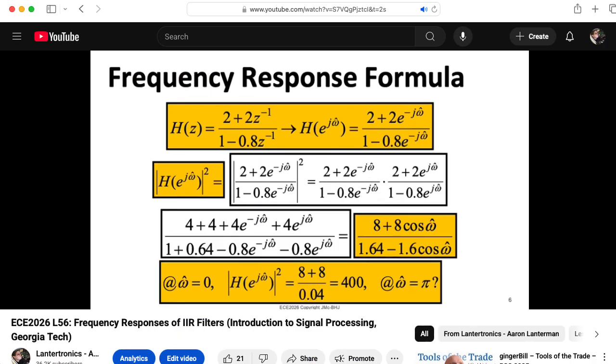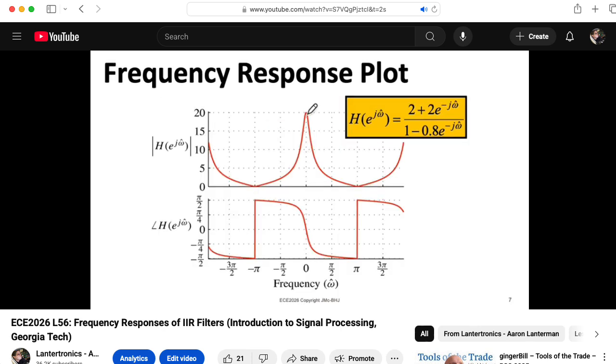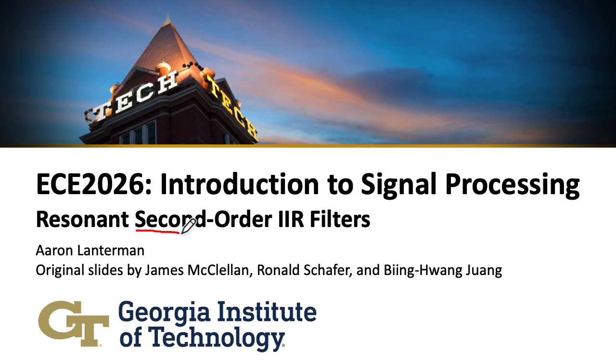In the last lecture, we talked about how the system function, aka transfer function, which is the Z-transform of the impulse response, relates to the frequency response. But our examples were all first-order systems, with a pole restricted to be on the real axis. So we could use that pole to create a low-pass or a high-pass effect, but not a bandpass effect. In this lecture, we'll see that by moving from first-order to second-order IIR filters, we can create resonant bandpass filters.